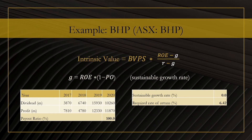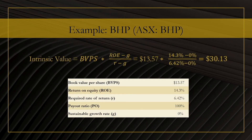Having computed the return on equity and the payout ratio, we can now compute the sustainable growth rate. As you can see, that becomes zero, because PO equals to one, so the second term in the formula is zero, making the entire product zero as well. I have set the required rate of return to be 6.42%. We used linear regression to get a book value of 13.57, a simple average to get a return on equity of 14.3%, and a four-year total of dividends and earnings to get a payout ratio of 100%, giving a sustainable growth rate G of zero. Combining all of these values gives an intrinsic value for the company of $13.13. The price of BHP at this point is above $50, so at least this computation suggests that BHP is overvalued.